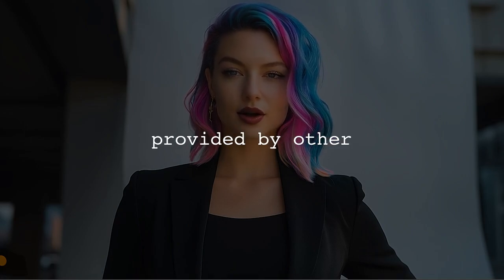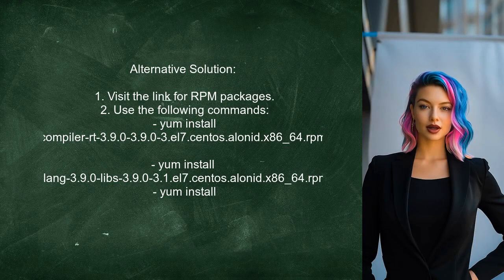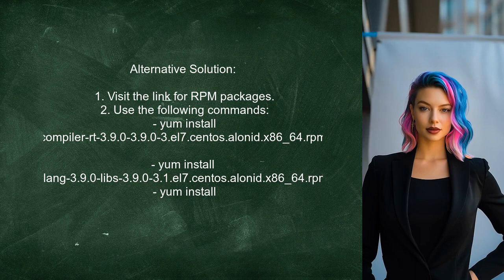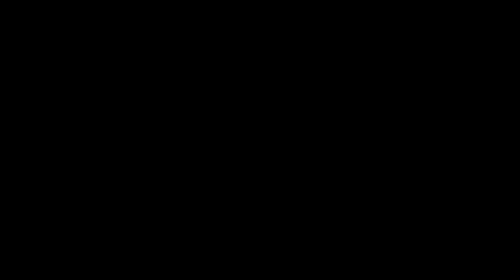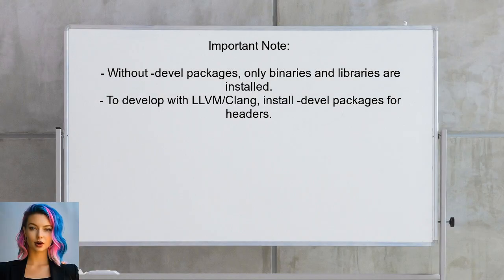Now let's look at the answers provided by other users. An alternative approach to install Clang and LLVM 3.9 on CentOS 7 involves using specific RPM packages. First, visit the provided link to find the necessary RPM files. Then use the yum install command for each package in the following order: Compiler RT, Clang libraries, Clang itself, and LLVM libraries. It's important to note that without the development packages, you will only have the binaries and libraries. If you plan to develop with LLVM or Clang, make sure to install the devel packages to access the necessary headers.